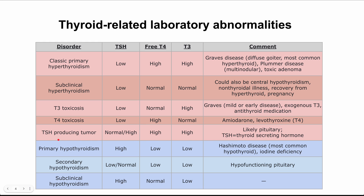Next, let's talk about the hypothyroidism disorders. First is primary hypothyroidism. Here you'll have low T4 and low T3, and your TSH is going to be high in response. The body is detecting the low T4 and T3 and ramping up TSH to try to increase those levels.